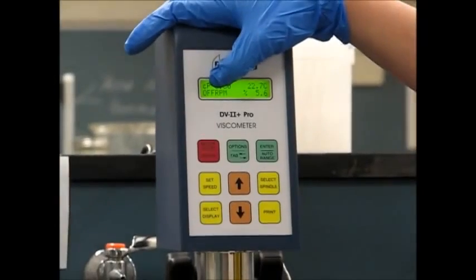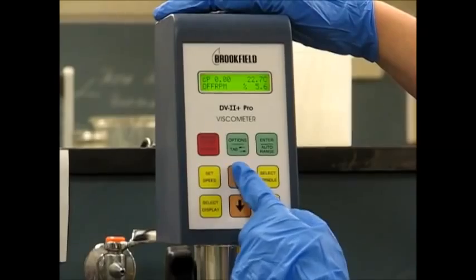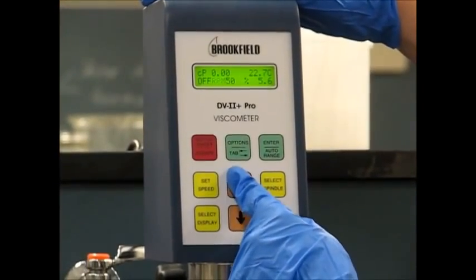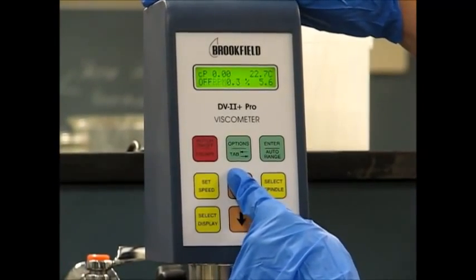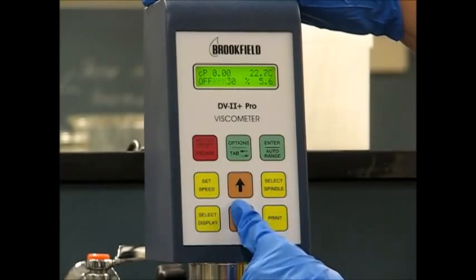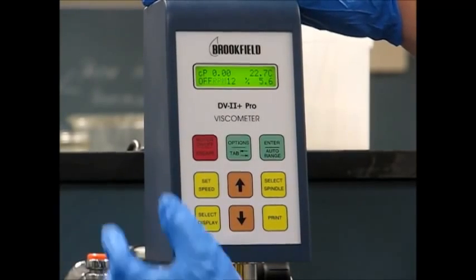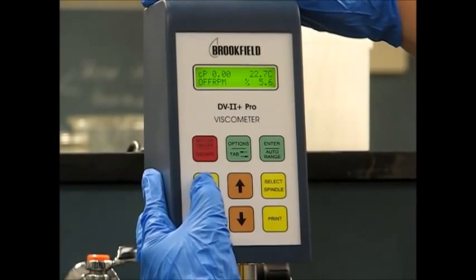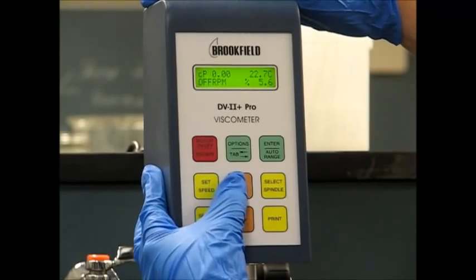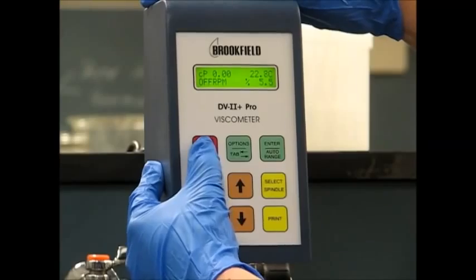We're going to be adjusting rpms to take our measurements. To do that, we use the up and down arrows. Our first measurement will be taken at 12 rpms. So we set speed and turn the motor on.